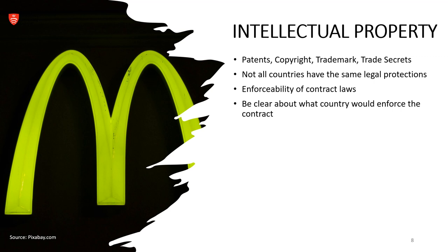An example is a pharmaceutical company might receive a patent for a new drug compound that treats a particular disease, preventing other companies from producing or selling that compound without permission. Copyright protection is for authors of original works of authorship, including literary, dramatic, musical, artistic, and certain other intellectual works, both published and unpublished. Copyright gives the author or owner the exclusive right to reproduce, distribute, perform, display, or license the work. For example, an author writes a novel and copyright law protects their right to control who can make copies or create derivative works.